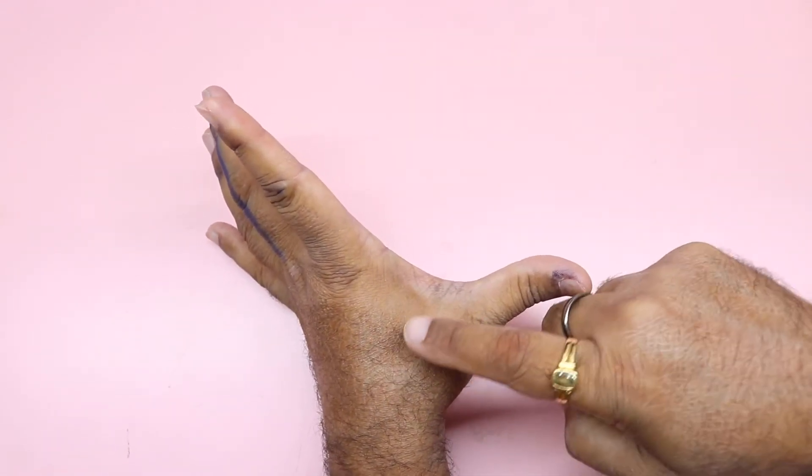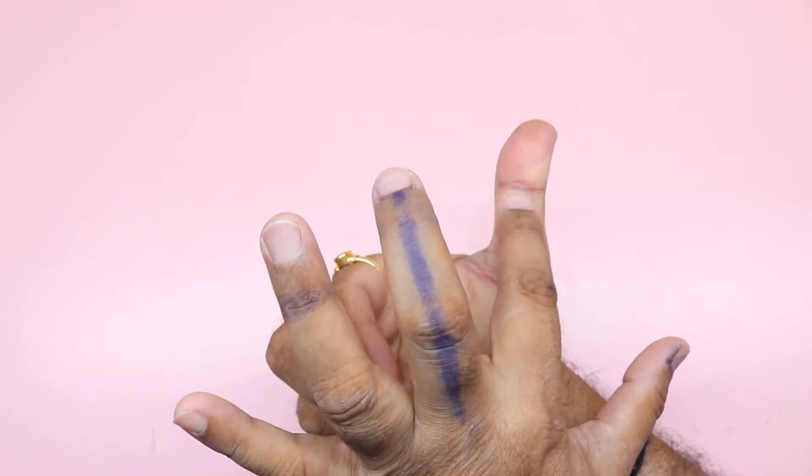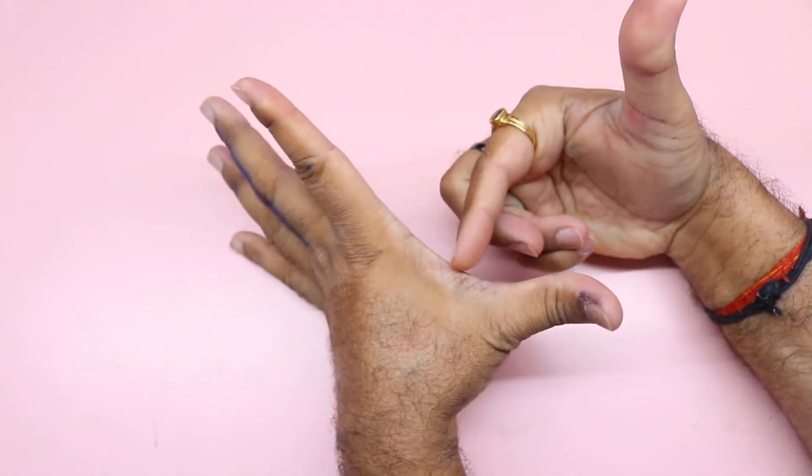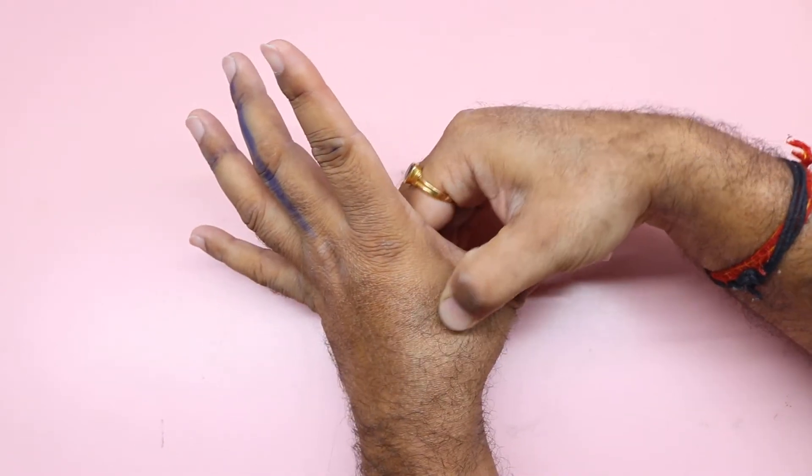One point is here. How to get this point? You see the top joint of the other thumb - over here, stretch the skin, put the top joint, and where it ends, this is the point.